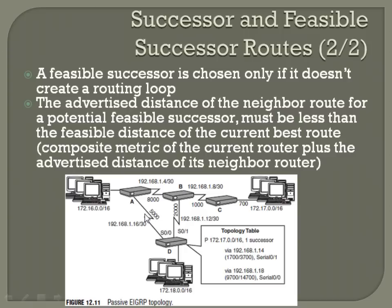That doesn't mean it's not going to still use this route in the event this link goes down — it just means it won't do it as quickly. Since it doesn't consider this a feasible successor because the advertised distance is greater than the current feasible distance of the successor route, in the event that this link goes down, it's going to change its topology table, advertise out everywhere, and run the DUAL algorithm again to determine its best route. It's going to see that this is its only route there and still use it. Just because something isn't a feasible successor doesn't mean it won't be the route taken if the link fails — it's just that the high composite metric means the DUAL algorithm has to prevent loops.